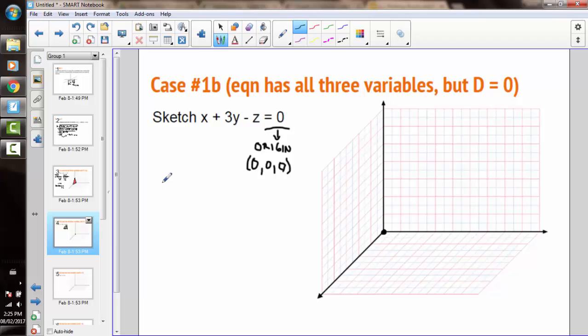We need to find a second point. And we can do that by finding something that is on the x-y plane. If we have a point on the x-y plane, the z value is equal to 0. If z is equal to 0, our equation becomes x plus 3y equals 0.